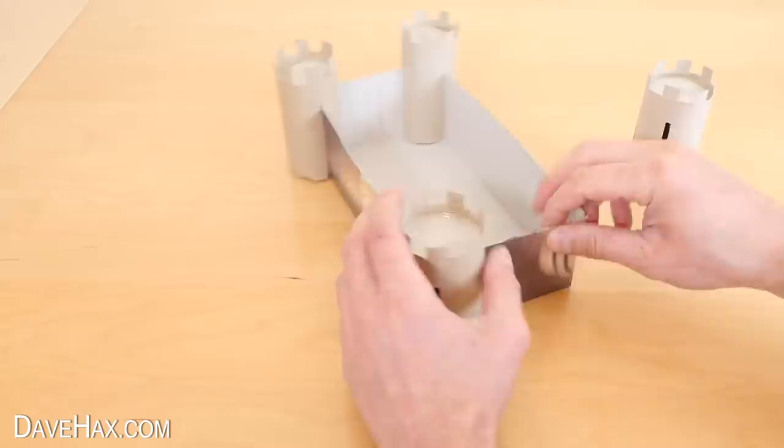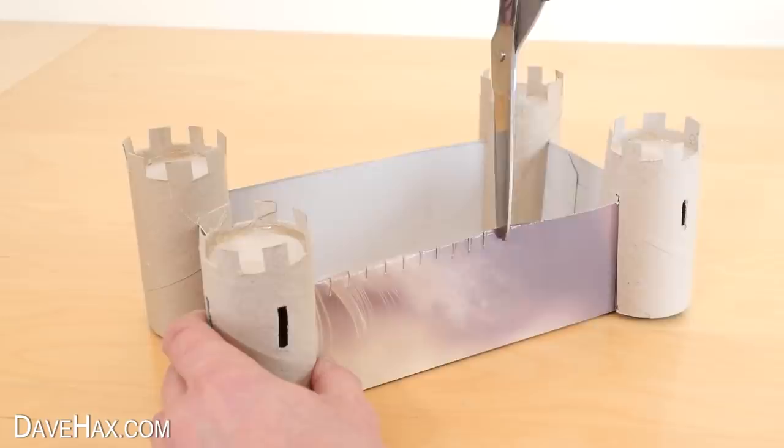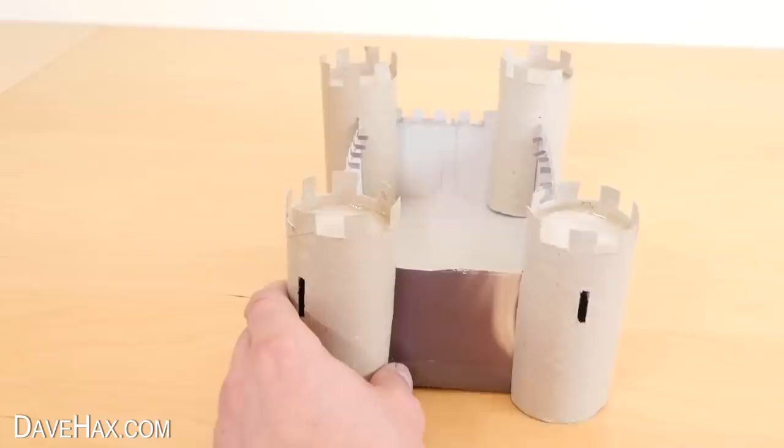Next I used my scissors again to make more crenellations along the castle wall. I did all four sides. And cut off the folds. And it's really starting to take shape.